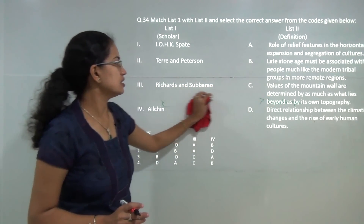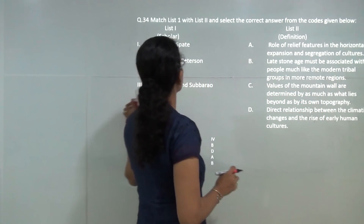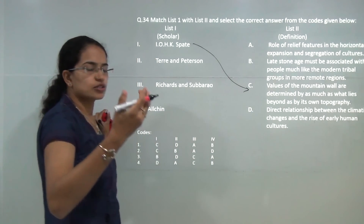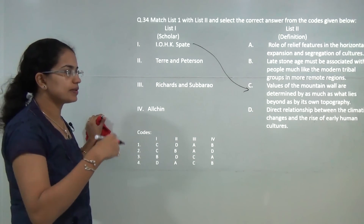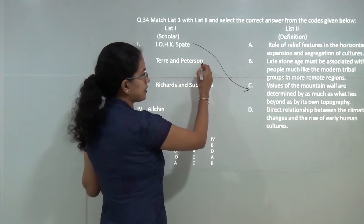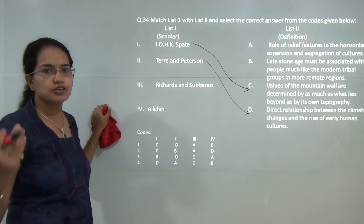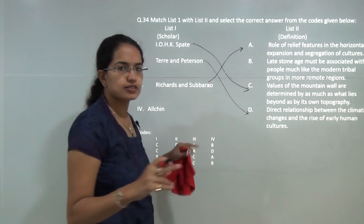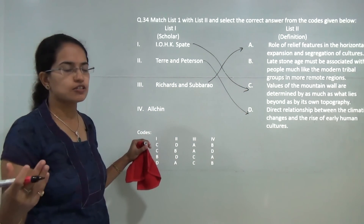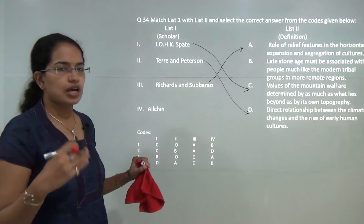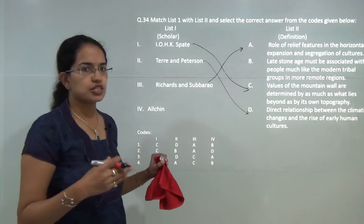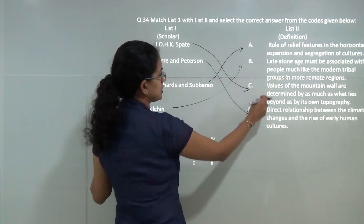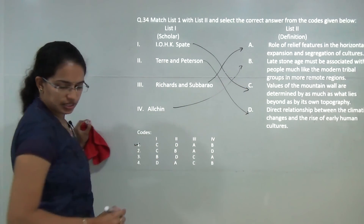Next you have to match the works and the authors. Spate explained the role of the Himalayas, saying the mountain world determines the topography that lies below it. Terry and Petterson gave a direct relationship between changes in climate and human cultures. Richards and Suba Rao explained how horizontal expansion and segregation of culture occurs. Elkin discussed archaeological aspects and how the late stone age was affected by tribal groups. So C, D, A and B is the correct option — answer 1.